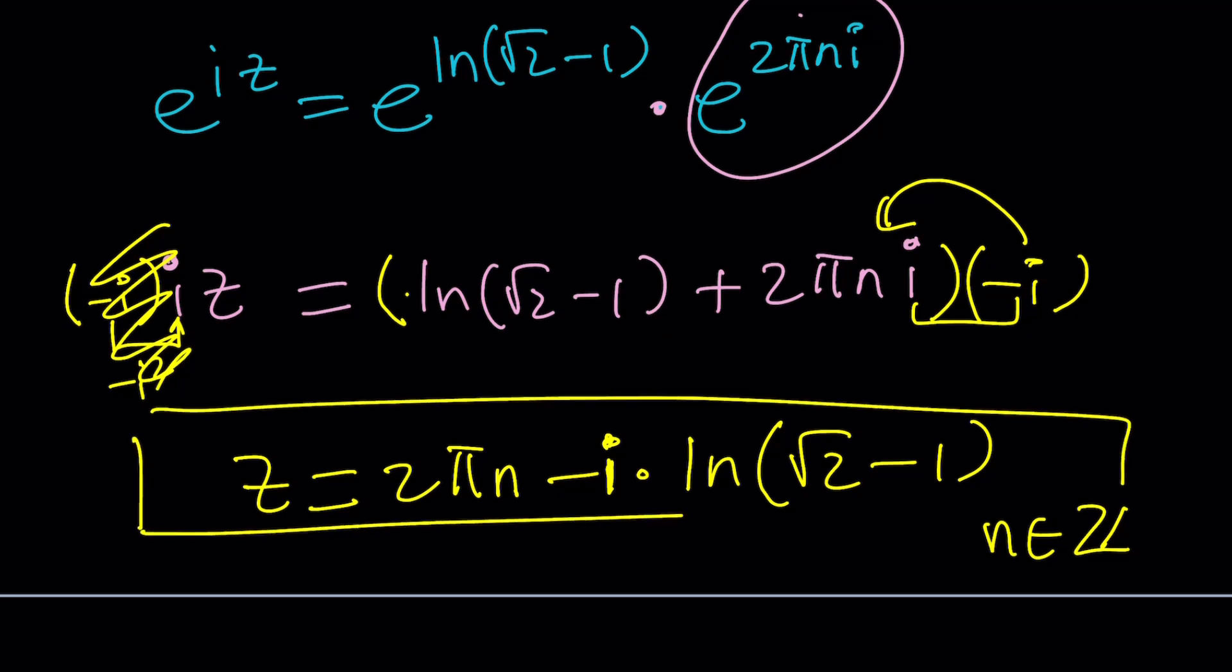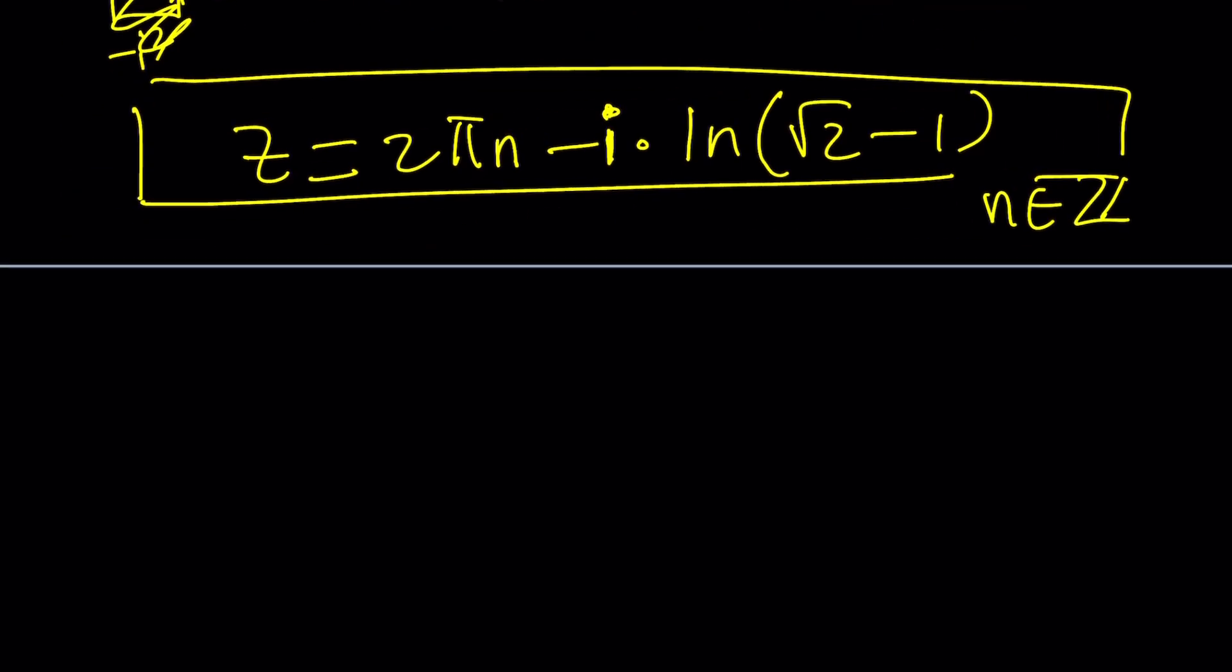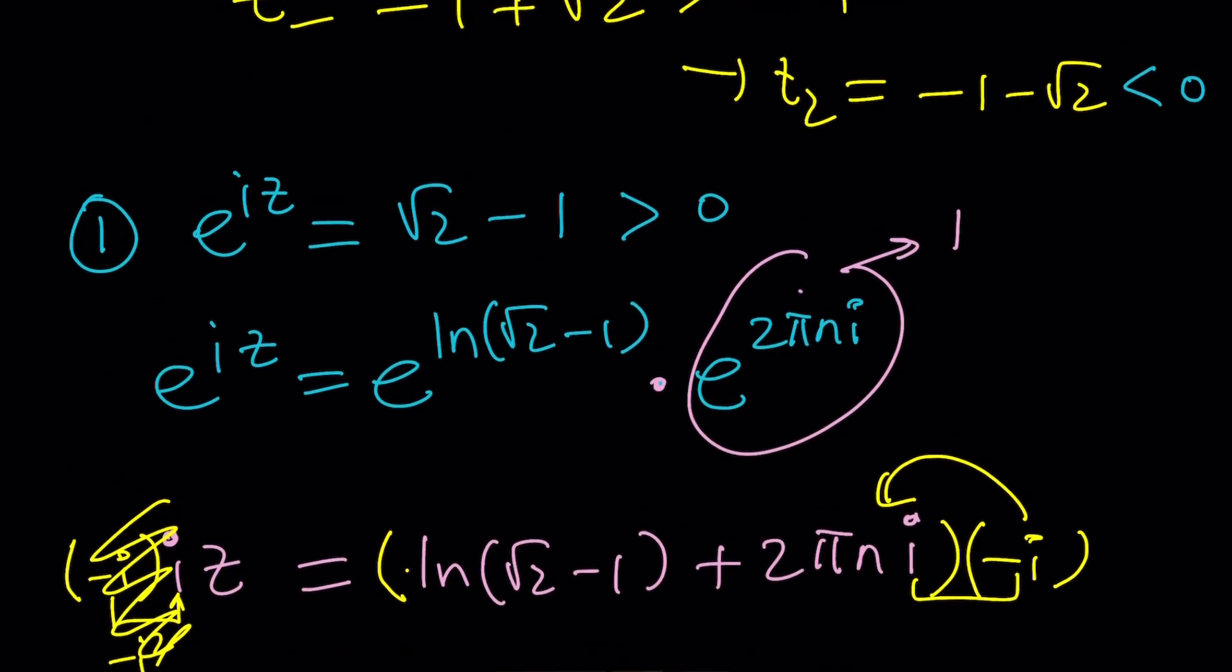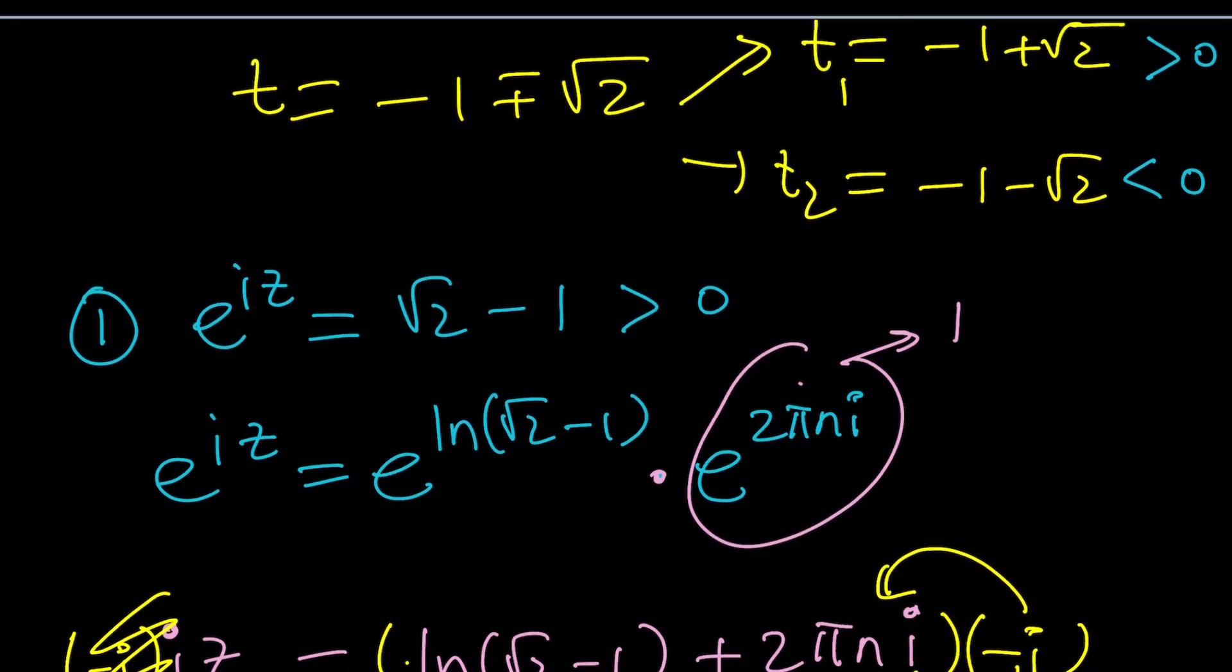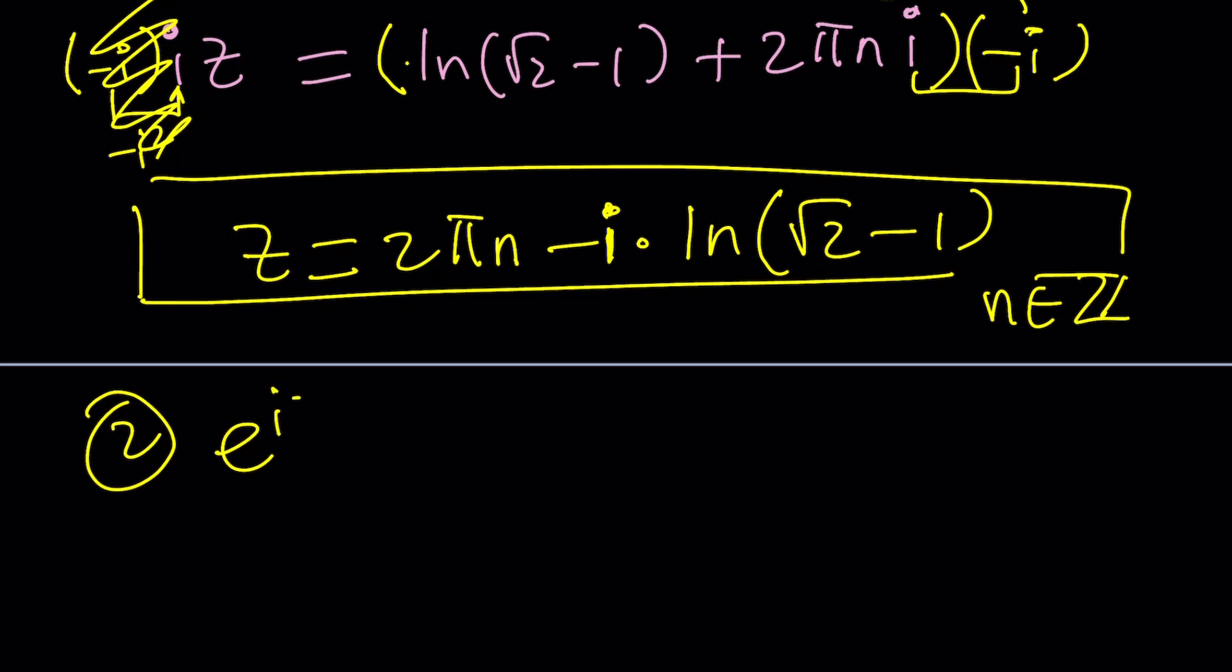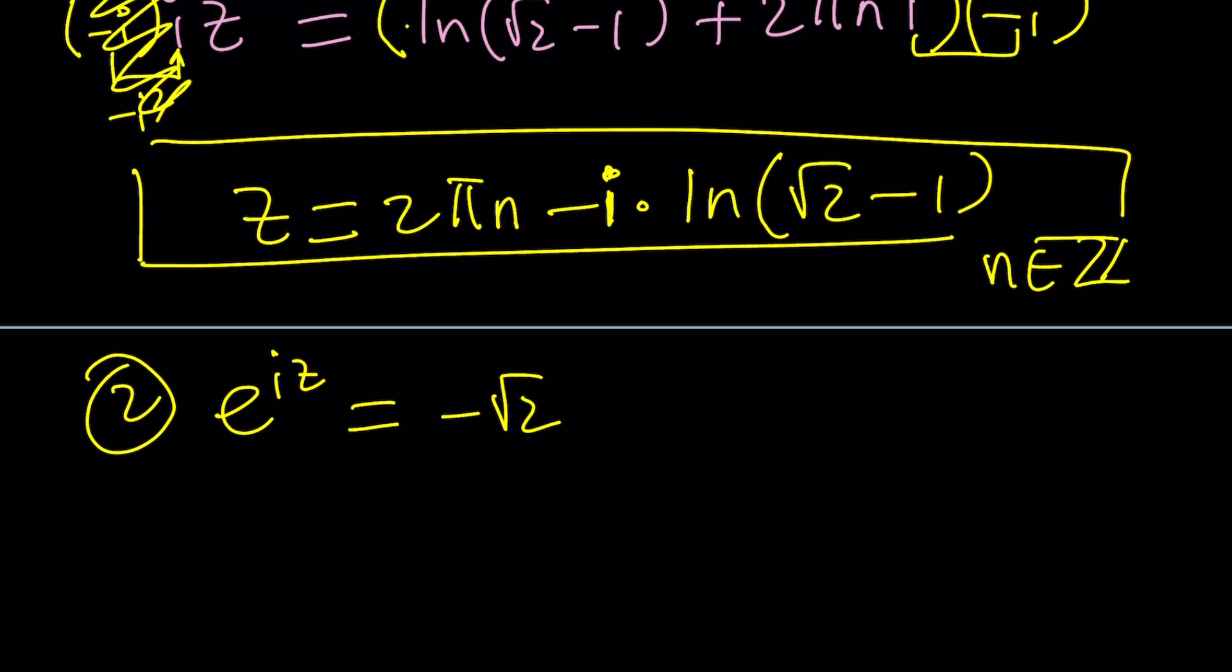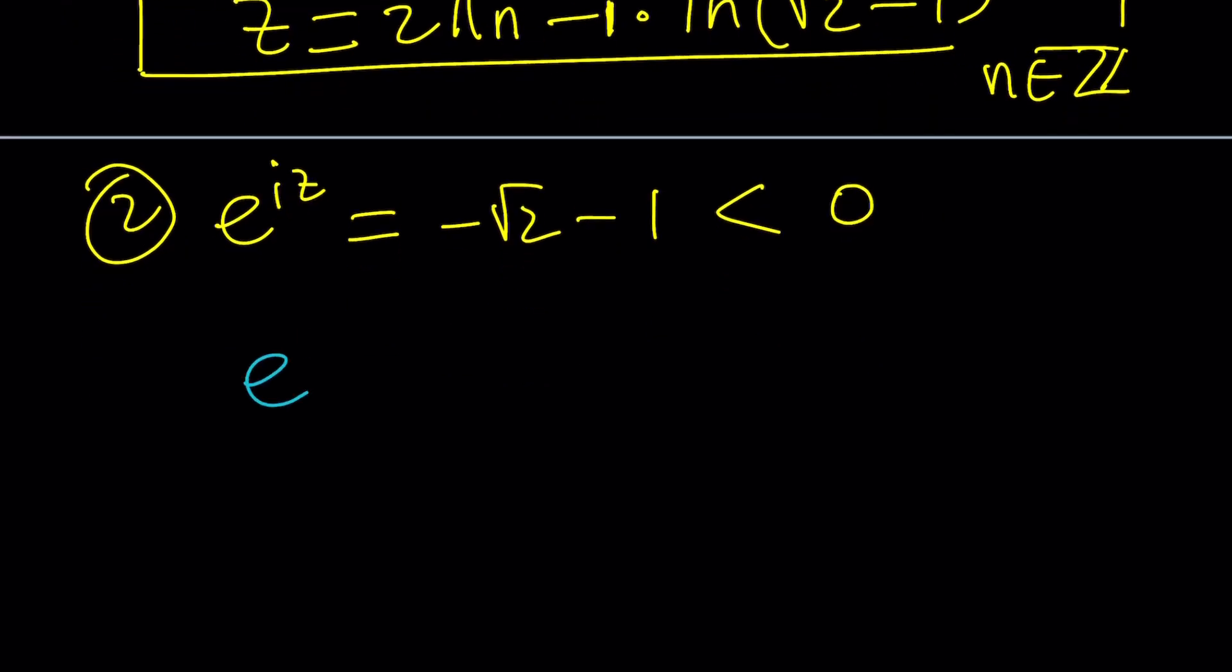Let's go ahead and keep that in a frame, because we're going to refer to it later, and look at the second value, the second t value that is negative. And that's definitely going to give us something very different. So in the second case, we have e to the iz equal a negative number. In the real world, e to the power of something cannot equal a negative number. But in the complex world, everything is possible. And notice that this is negative. But don't worry. We can fix it with a little touch.